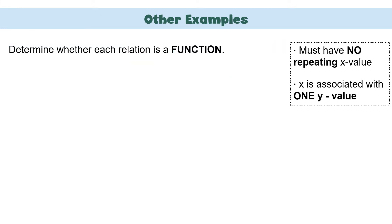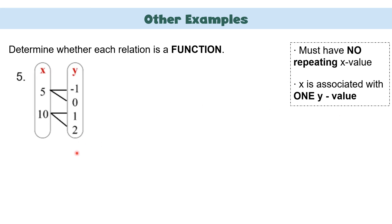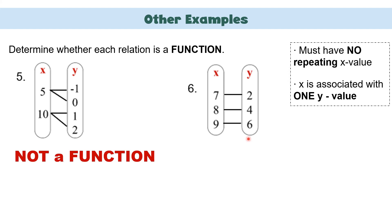Let us have more examples using mapping. In the first mapping, 5 is connected to -1 and 0, and 10 is connected to 1 and 2. Remember: x must be associated with only one y value. But here, 5 is paired with -1 and 0, and 10 is paired with 1 and 2. Therefore, this is not a function. In the next mapping, 7 is paired with 2, 8 with 4, and 9 with 6. Since x is associated with only one y value, this is a function.